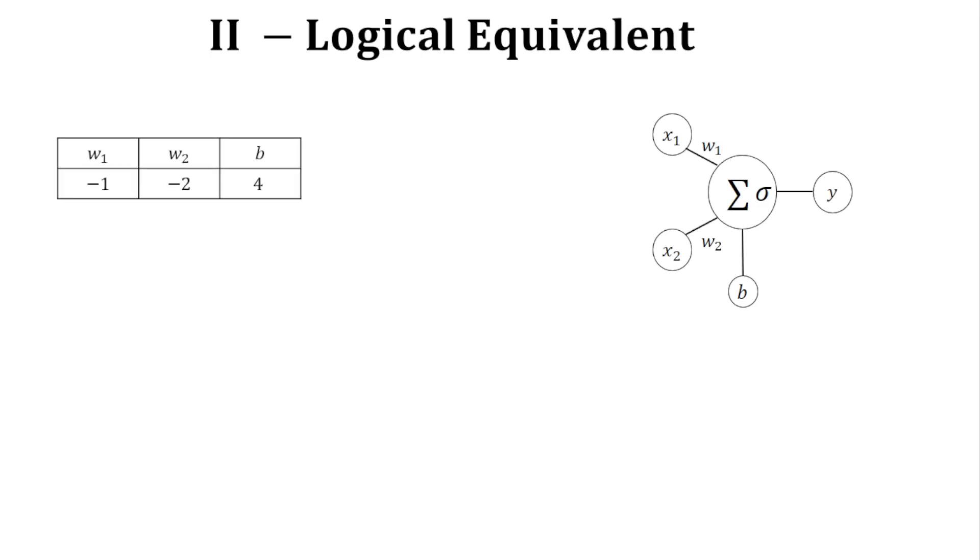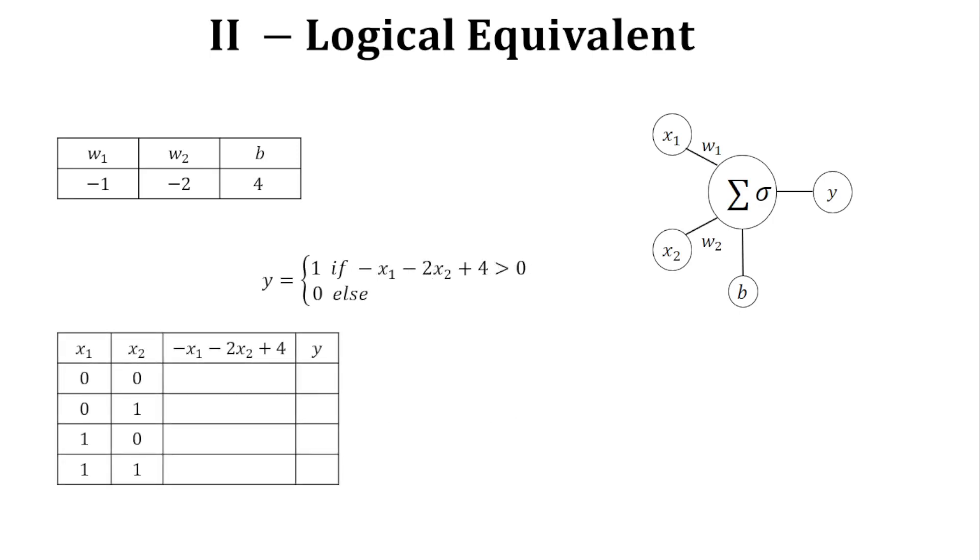One last example with these parameters. I update the formula again. Fulfill the truth table. So here what we have, everything is beyond the threshold. So this is equivalent to the logical gate true.